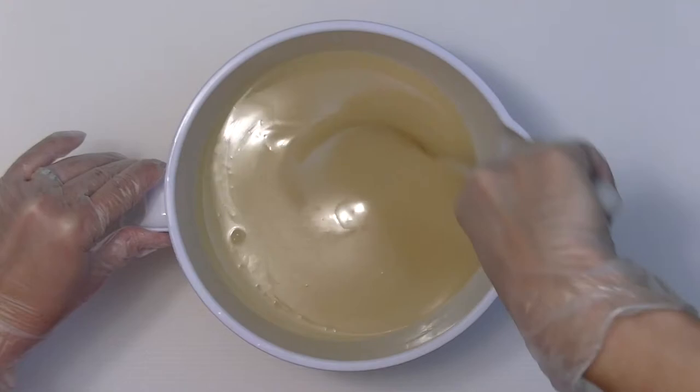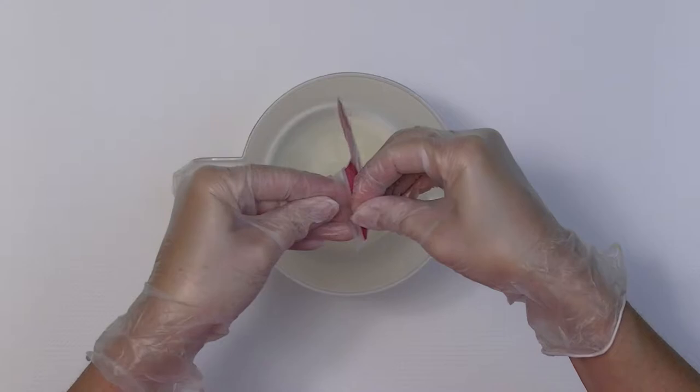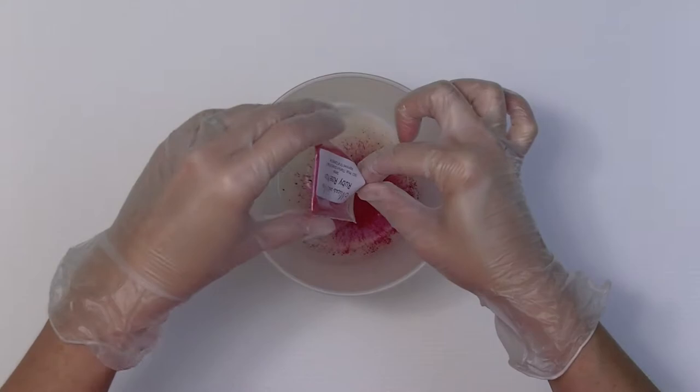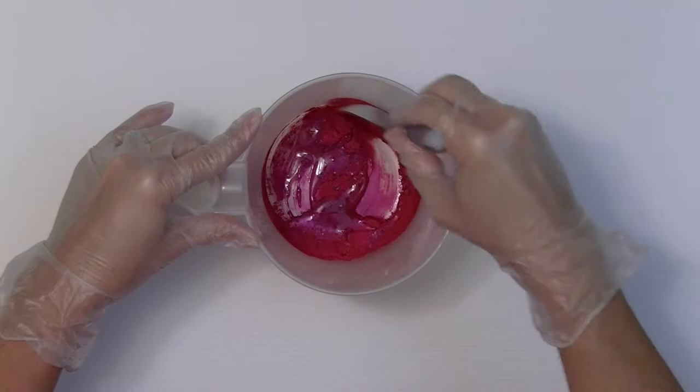Here's a sample size of the ruby rose mica, which is one teaspoon. I mix it in one tablespoon of my oils. After adding one cup of soap, I stir well.